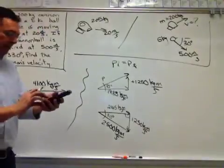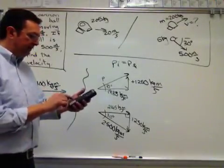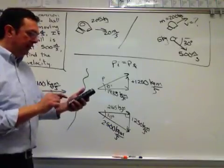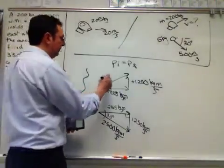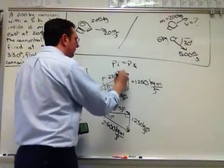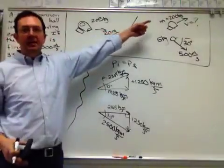Calculator again. Second function, square root of the quantity, 1250 squared plus 1935 squared equals 2304. 2304 kilogram meters per second. And that's the final momentum of the cannon up there.